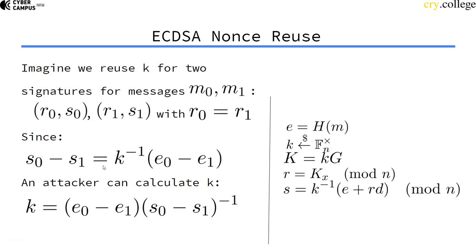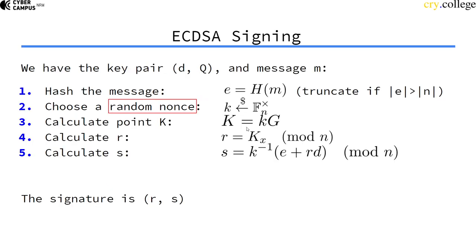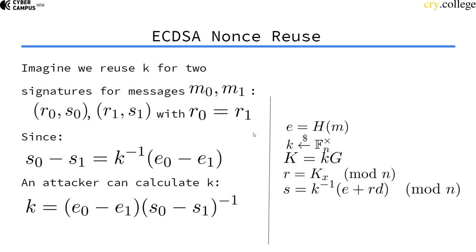Well, imagine we have two different signatures that use the same number K for two different messages. So, we have the first signature with R0 and S0, and the second signature with R1 and S1. And since we use the same K, here, R0 and R1 are actually the same, but S1 and S0 are not.